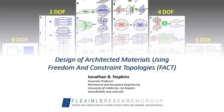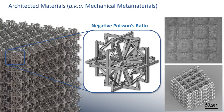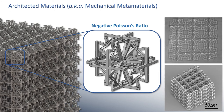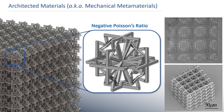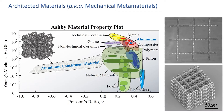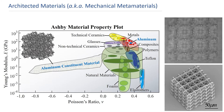Today I'm going to talk about a design approach I created called Freedom and Constraint Topologies, or FACT, that I've since adapted to enable the design of architected materials. Architected materials achieve their properties not so much from what material they're made of, but how they are structured. Consider this lattice — when compressed, instead of bulging outward like most natural materials would, its sides pull inward with a negative Poisson's ratio behavior due to how the unit cell's topology is structured. Architected materials can thus be engineered to achieve combinations of properties not otherwise possible using traditional homogenous or all-solid materials.